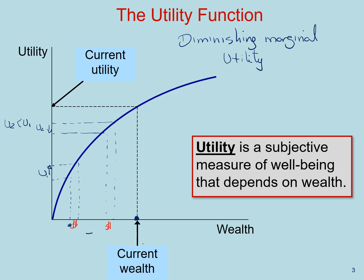the increase in subjective utility is going to be smaller. What diminishing marginal utility implies is that the value of $1 decreases as someone has more and more wealth. So the value of $1 to somebody who is relatively poor is much higher than the value of $1 to somebody who is relatively wealthy.